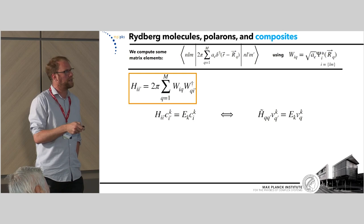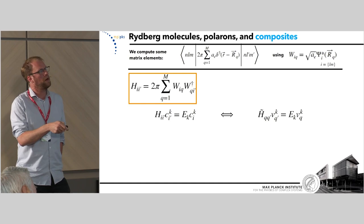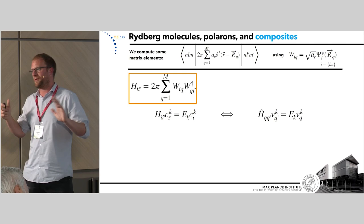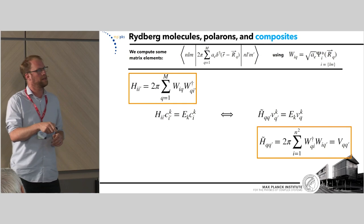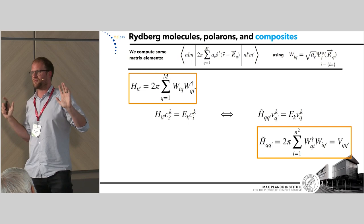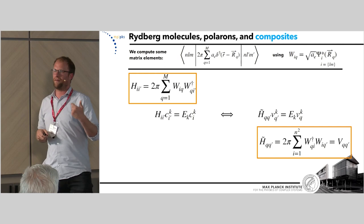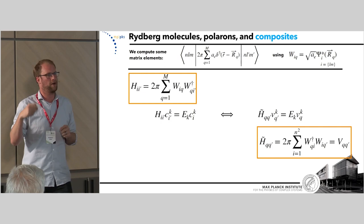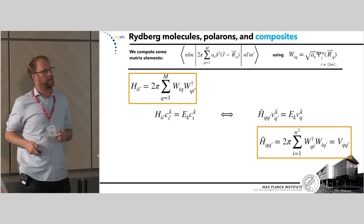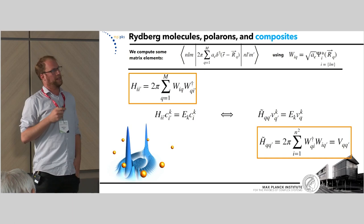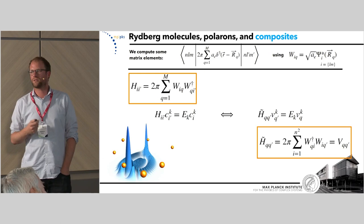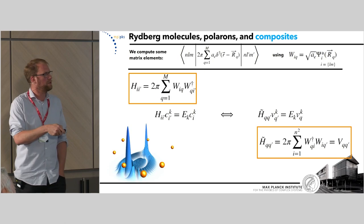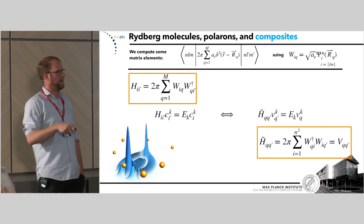Looking at the eigenvalue problem, we find the eigen-spectrum is exactly the same whether computed using H_II' or this transformed matrix H_QQ', which you obtain using the Moore-Penrose left inverse to swap the two W matrices. Now we have a matrix whose dimension is M, resembling a tight-binding Hamiltonian where its matrix elements tell us how a fictitious particle hops from perturber to perturber — and this has the exact same eigenvalues as our original Rydberg atom.